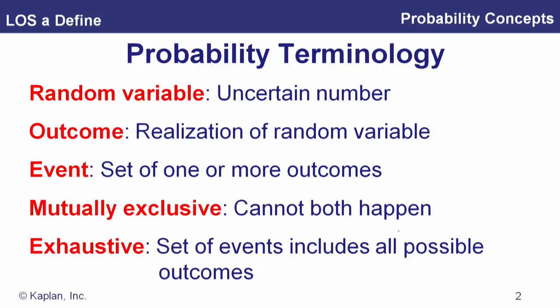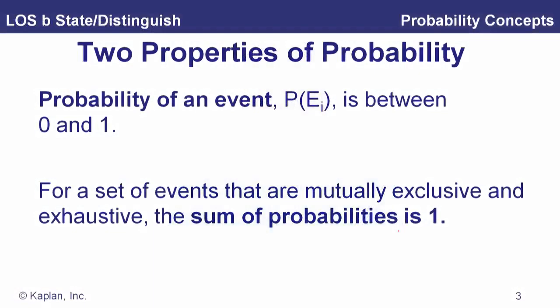If events are mutually exclusive, it means they can't both happen. When we talk about an exhaustive set of events, that's a set of events that includes all possible outcomes. The two basic properties of probability are straightforward: the probability of an event is between zero and one — zero means it's not going to happen, one means it's going to happen for sure. For a set of events that are mutually exclusive and exhaustive, the sum of their probabilities is one, or 100%, because we've covered all possible outcomes.